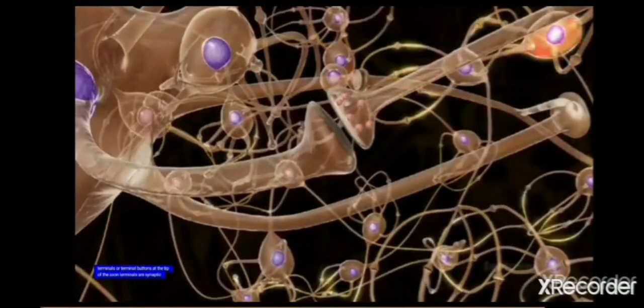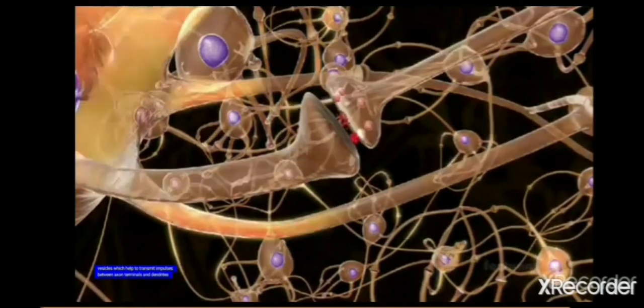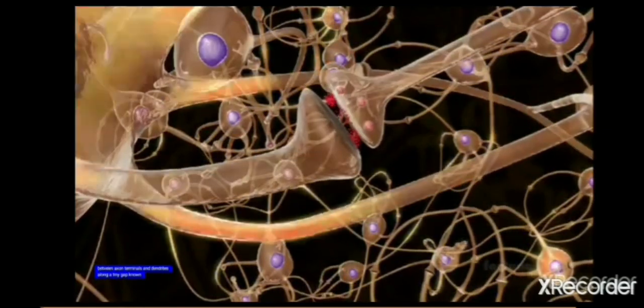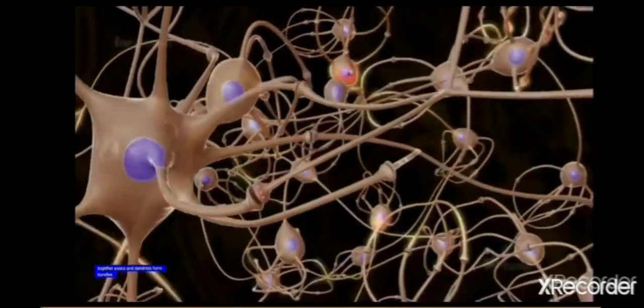The axon terminals of adjacent neurons form synapses, and synapse is the place where nerve impulse is transmitted from one neuron to the other neuron.